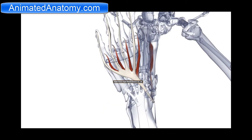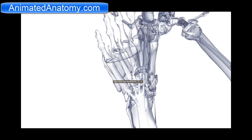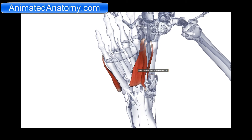Now I will remove these two muscles because I want to explain some other muscles. Here we have the flexor digiti minimi. Then we have the flexor hallucis brevis. Then we have the oblique head of the adductor hallucis and we have the transverse head of the adductor hallucis.